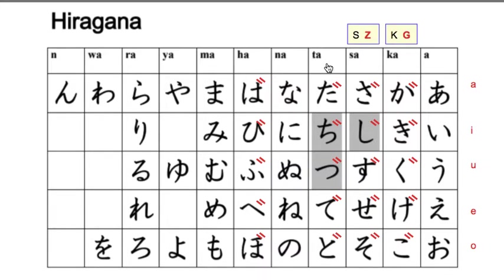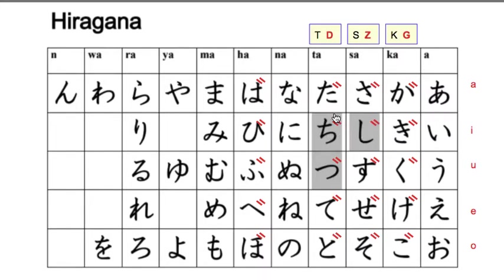The T sound column — ta, te, and to — they become D sounds. So ta becomes da, te becomes de, to becomes do. But chi and tsu already don't follow the normal pattern — they're not 'ti' and 'tu', they're chi and tsu. So when we add accents, chi becomes ji. And you might say, 'Sensei, you already told us that shi becomes ji.' Well, chi also becomes ji — they're both ji — so this one is almost never used.